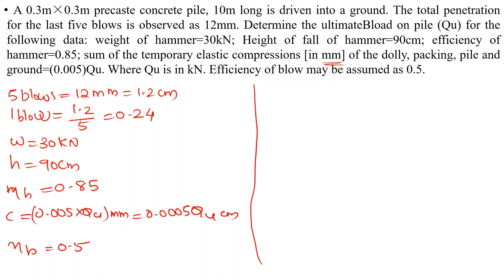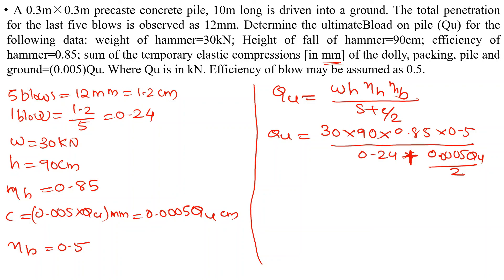The equation is Qu equals W times h times eta_h times eta_b divided by s plus c/2. So Qu equals 30 times 90 times 0.85 times 0.5 divided by 0.24 plus c/2. c/2 is 0.0005 Qu divided by 2. Here we have a quadratic equation with Qu on both sides.